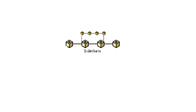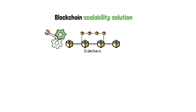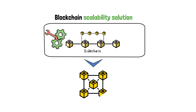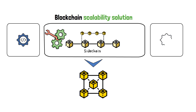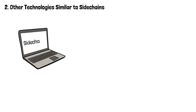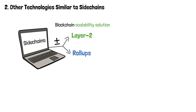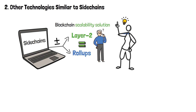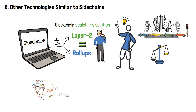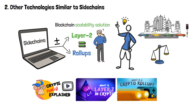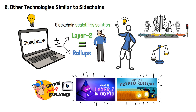Technology like sidechains is what we refer to as a blockchain scalability solution — basically, technology intended to improve its base blockchain. And a sidechain is not the only solution out there. When you research sidechains, you're likely to encounter two terms: layer 2 and rollups. These are types of blockchain scalability solutions, each with its own strengths and weaknesses. Sometimes people mistake one tech for another due to their similarities. I also have two dedicated videos on both rollups as well as blockchain scalability solutions in general — I highly recommend checking them out after you finish watching this one.